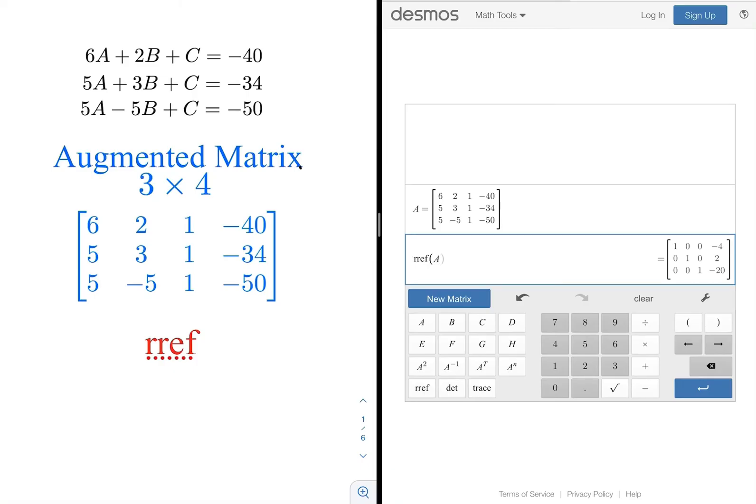And you can see that it equals the values at the right. So let's write that down. So we have in row 1: 1, 0, 0, negative 4. And in row 2: 0, 1, 0 and 2. And row 3: 0, 0, 1, negative 20.